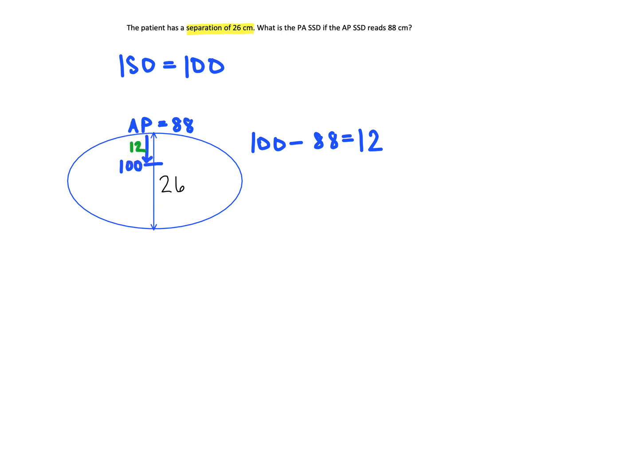Now we need to find the distance from the PA entrance point to isocenter. Well, we know the entire distance is 26, and we already went 12 for the AP beam. So to find this distance, we'll just take our total separation and subtract the depth from the AP.